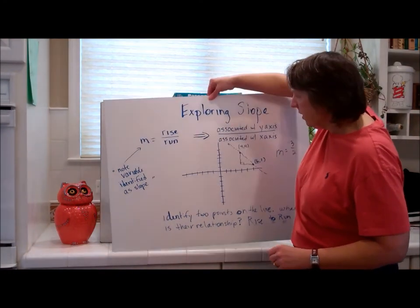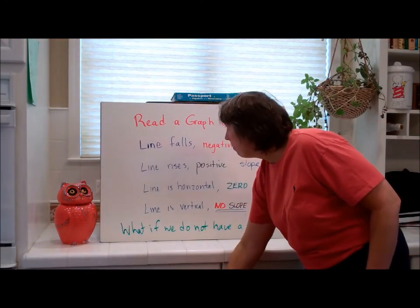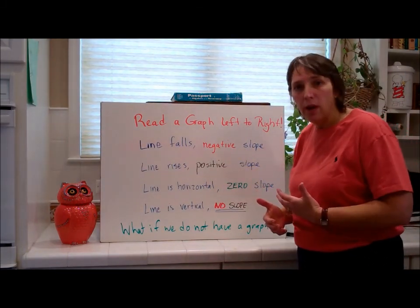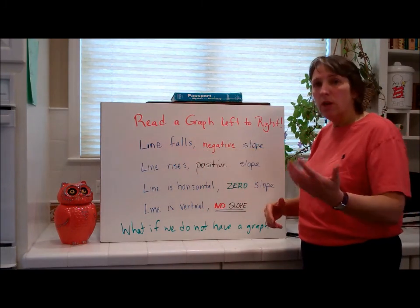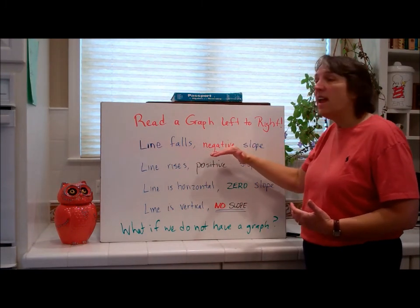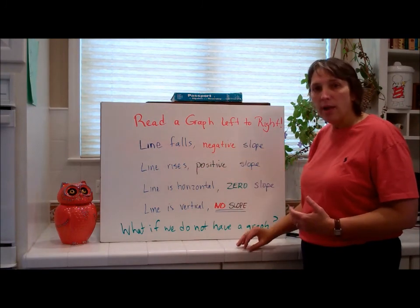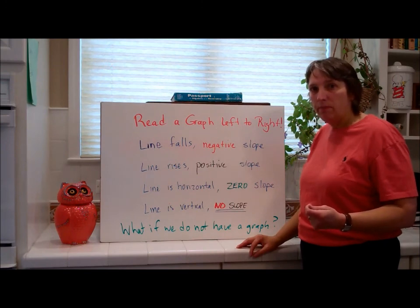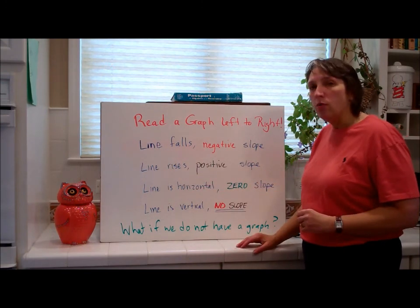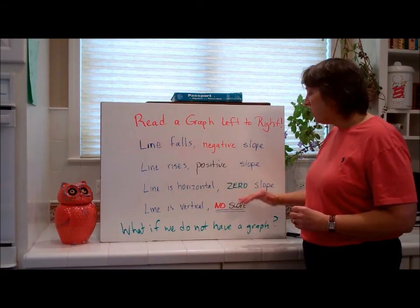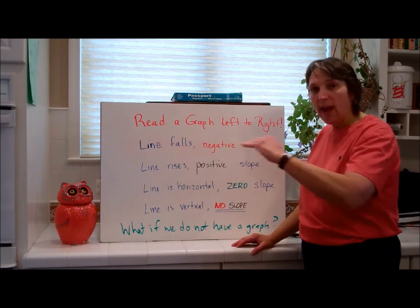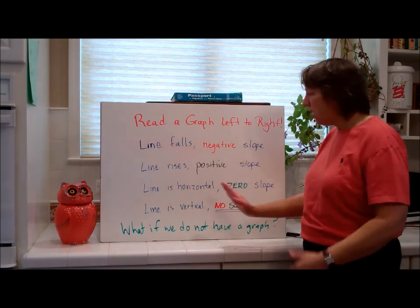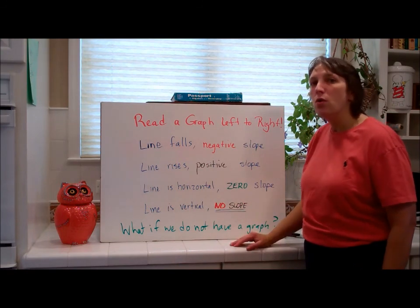So as we look at that, you want to remember, how do you read a graph? You read it from left to right. And if the line falls from left to right, then you have a negative slope. If the line rises from left to right, you have a positive slope because you're going up. If the line is horizontal from left to right, you have zero slope, flat. And if the line is vertical from left to right, so you come across it and it goes straight up and down, it has no slope.